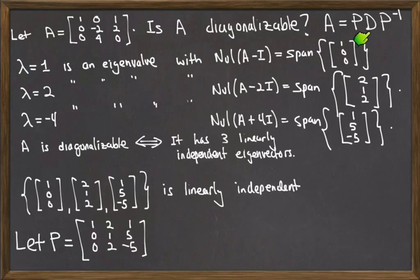The diagonal matrix D that we will take will be the matrix whose diagonal entries are the eigenvalues. And the only thing you have to worry about here is that you do it in the order that you did the eigenvectors.